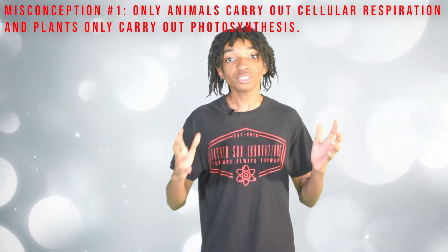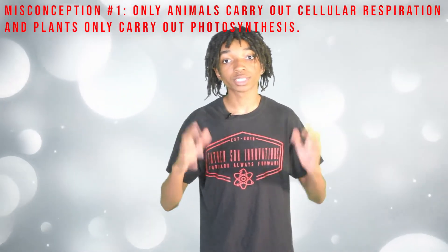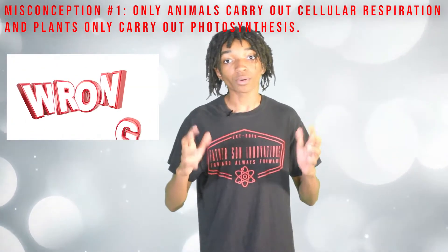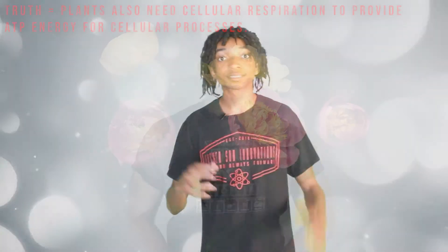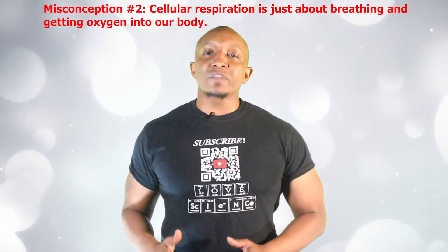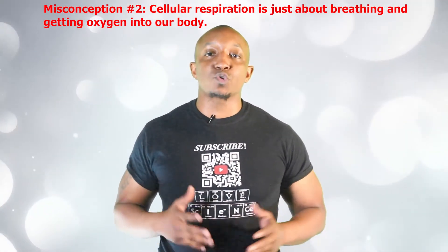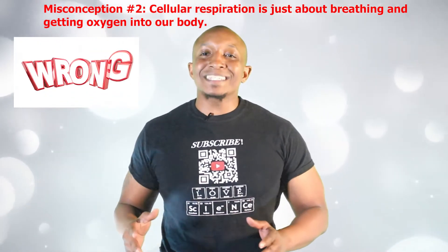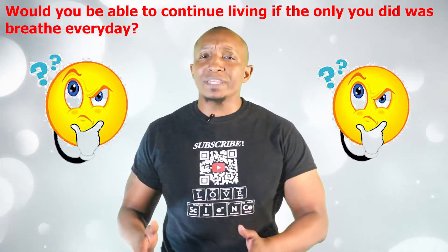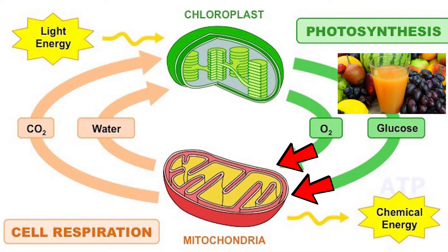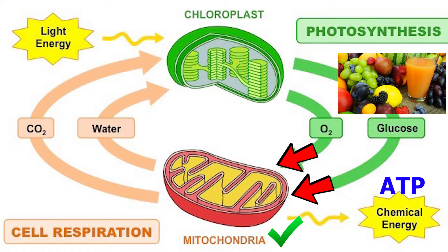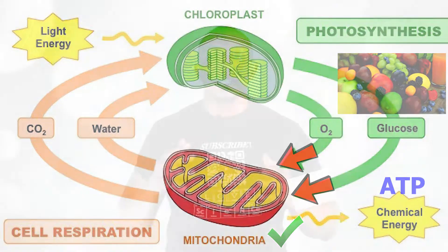Let's start off by talking about some common misconceptions of cellular respiration. Misconception number one: many students believe that only animals carry out cellular respiration and only plants carry out photosynthesis. This is false. The truth is that plants also need cellular respiration to provide ATP energy for cellular processes. Misconception number two: many students often believe that cellular respiration is just about breathing and getting oxygen into our body. This is also false. The truth is that cells need more than oxygen to survive. Would you be able to continue living if the only thing you did was breathe every day? Our cells require glucose from the food we eat and oxygen to make ATP in our mitochondria. We need this ATP to carry out many processes in our cells and hundreds of other functions throughout our entire body.